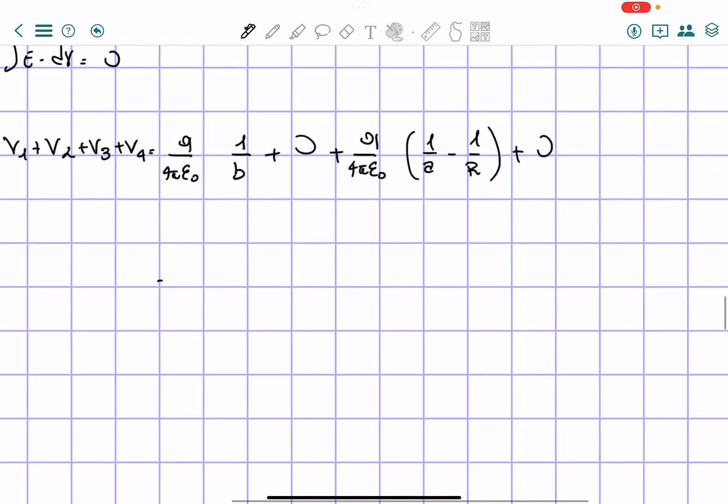So our final answer, let's collect q over 4 pi epsilon naught. Then we have times 1 over b plus 1 over a minus 1 over R. And that is our final answer.